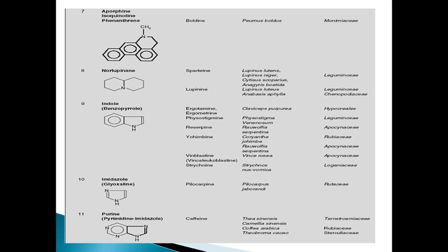The seventh class is aporphine isoquinoline. An example is boldine. Peumus boldus is the botanical origin and Monimiaceae is the family.